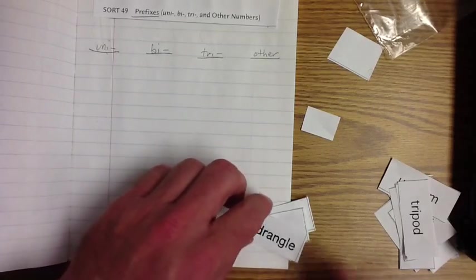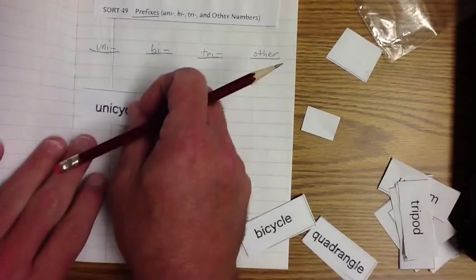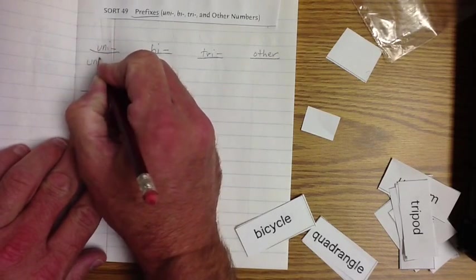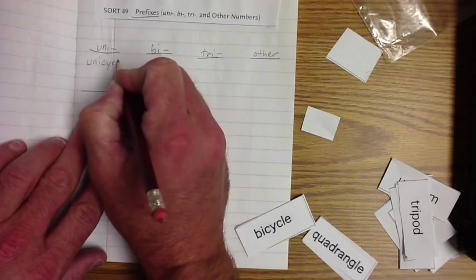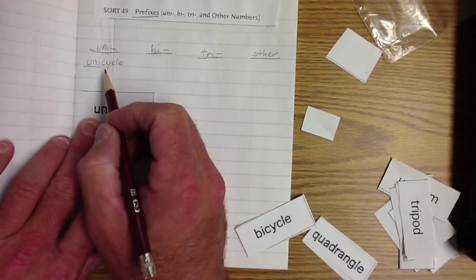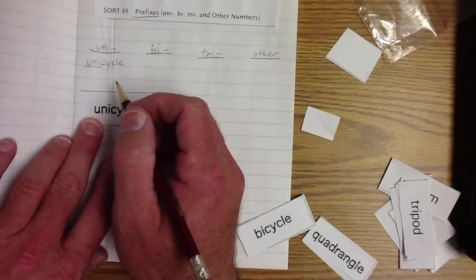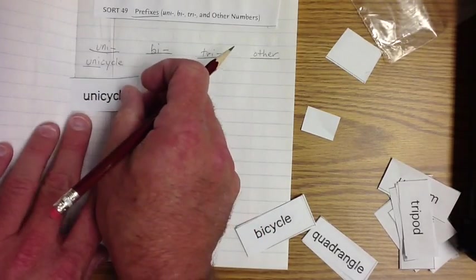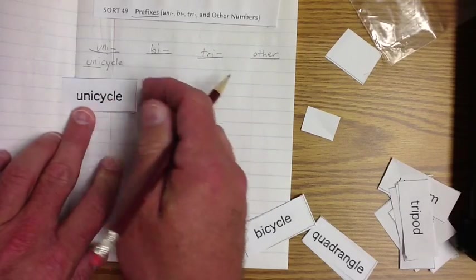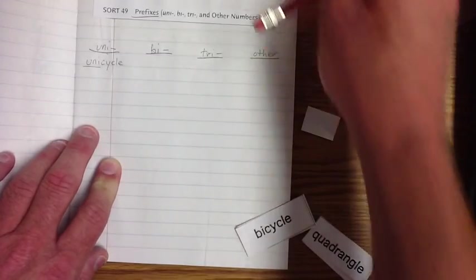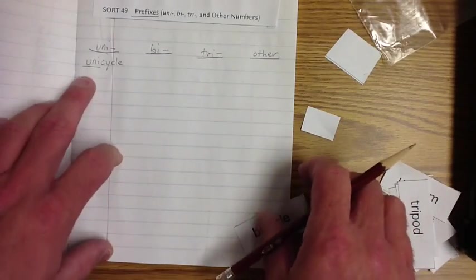Uni, uni. What we're going to do is I'm going to look at this. Oh, look at that. We got a unicycle. Unicycle. Uni is the prefix. We know what a cycle is. It's something that we ride with wheels, right? That's kind of what a cycle is. It's usually man-powered, not like a car. We don't call a car a cycle.